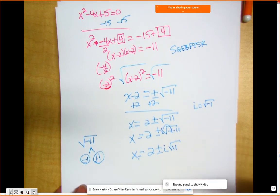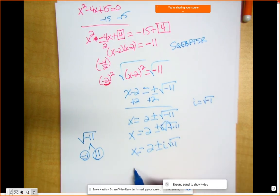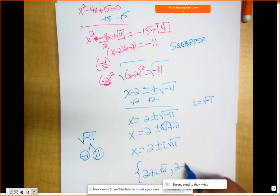Now do remember that on multiple choice tests, they could write it either way. They could write 2 plus i root 11 or 2 minus i root 11. Could be either one.